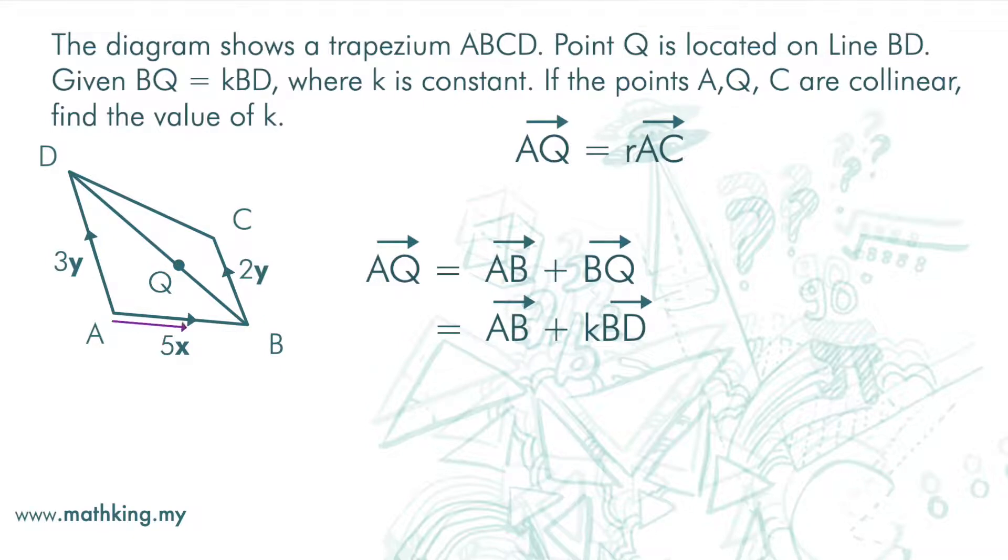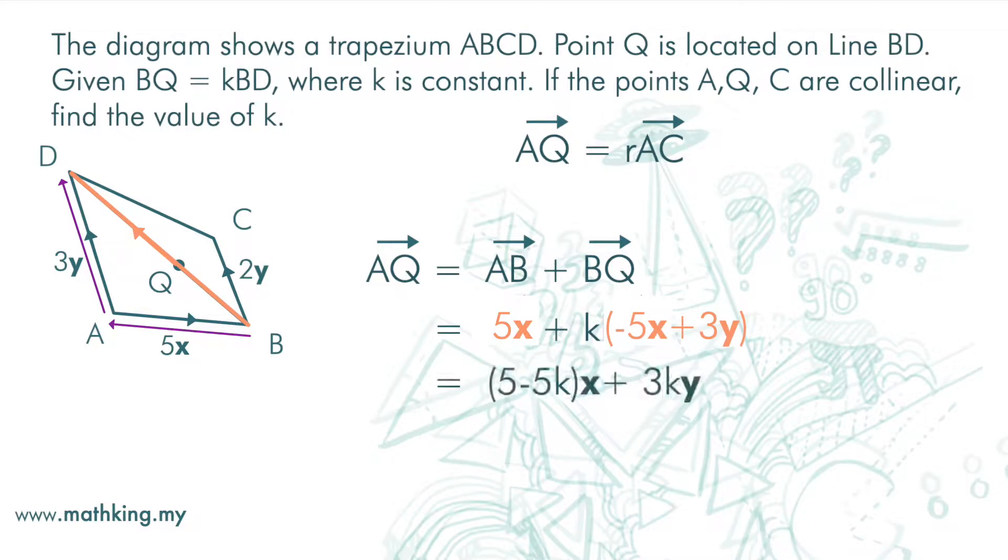And AB is 5X. BD is negative 5X plus 3Y. Vector AC is AB plus BC, and this is 5X plus 2Y.